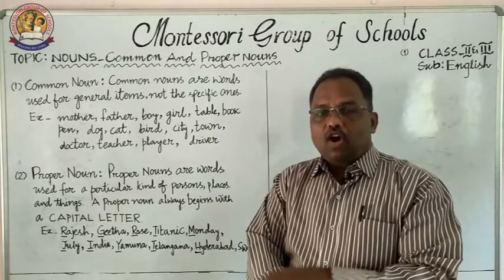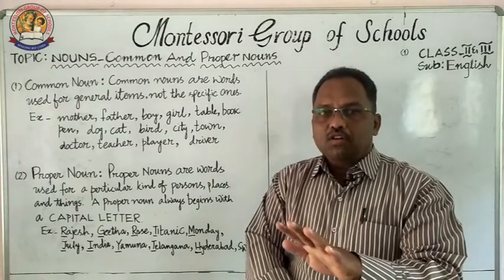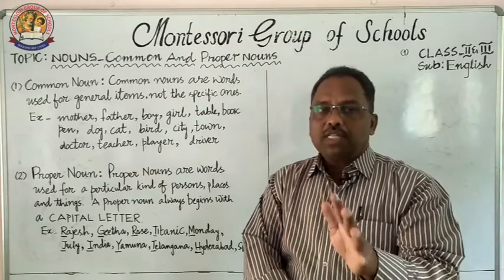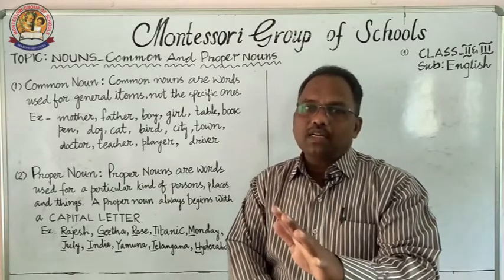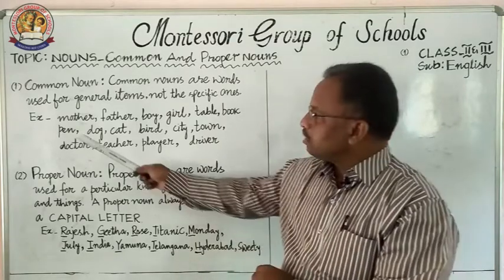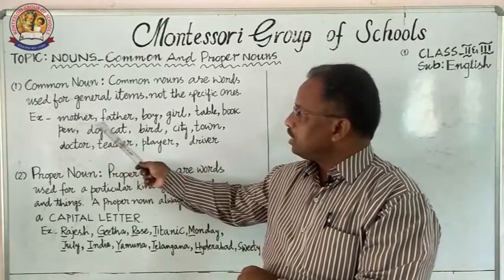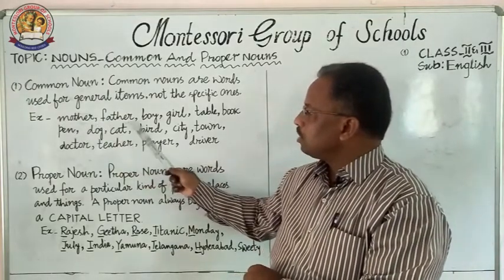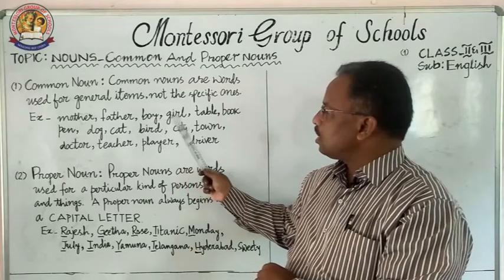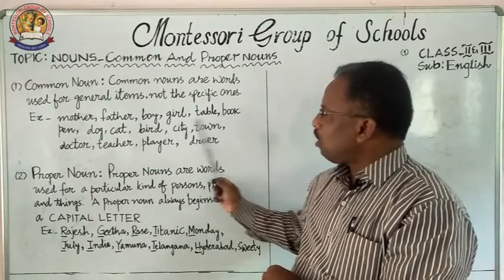Whereas a common noun need not start with a capital letter. You can see here: mother — small m, father — small f, boy — small b, girl — small g, table — small t, book — small b. All common nouns are written with small letters.